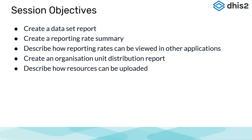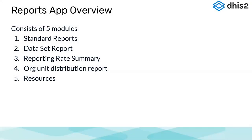Next session is on the Reports app where we create different kinds of reports in DHIS2. The objectives are: how to create a data set report, how to create a reporting rate summary, how these reporting rates can be viewed in other applications, how to create an organization unit distribution report, and how to upload resources in the system. The Reports app consists of five modules: standard reports, data set report, reporting rate summary, organization unit distribution report, and resources.